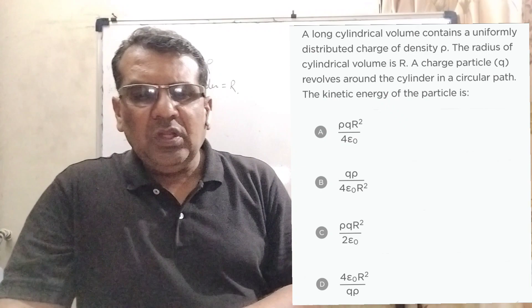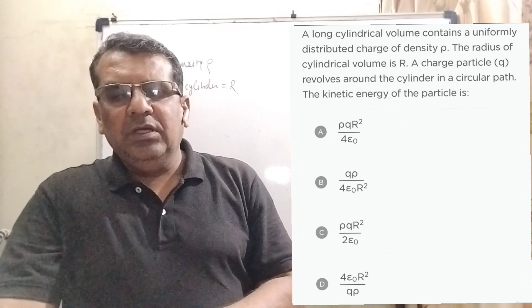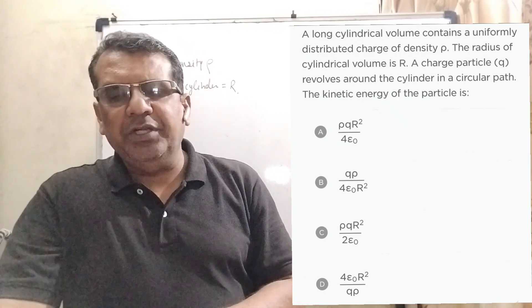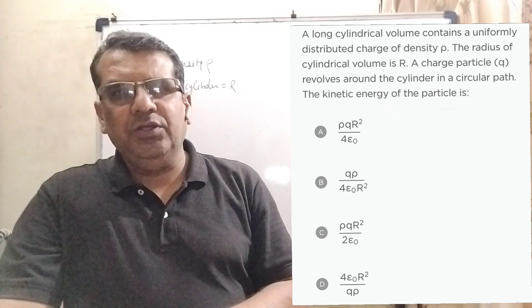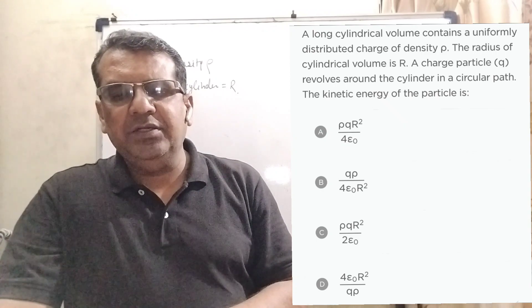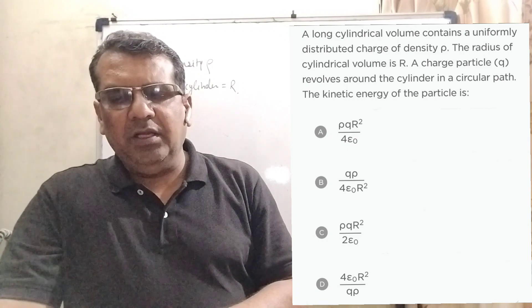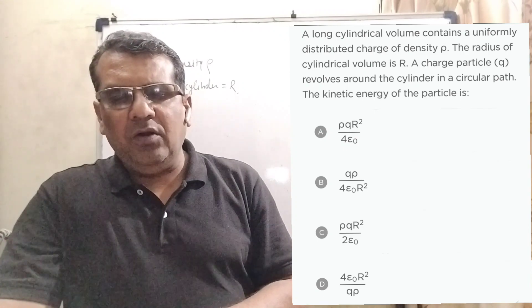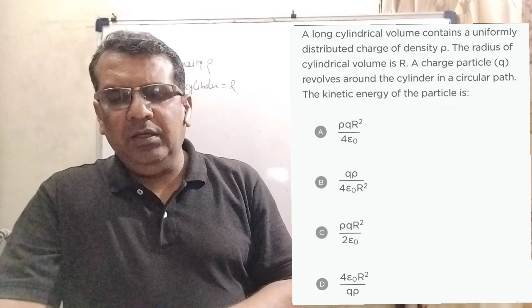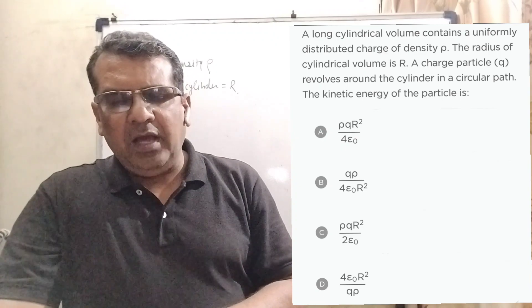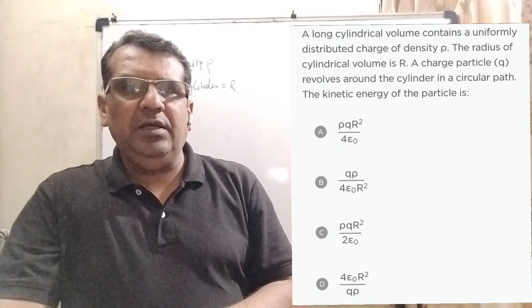Now here is the question. A long cylindrical volume contains a uniformly distributed charge of density ρ. The radius of cylindrical volume is capital R. A charged particle Q revolves around the cylinder in a circular path. The kinetic energy of the particle is: